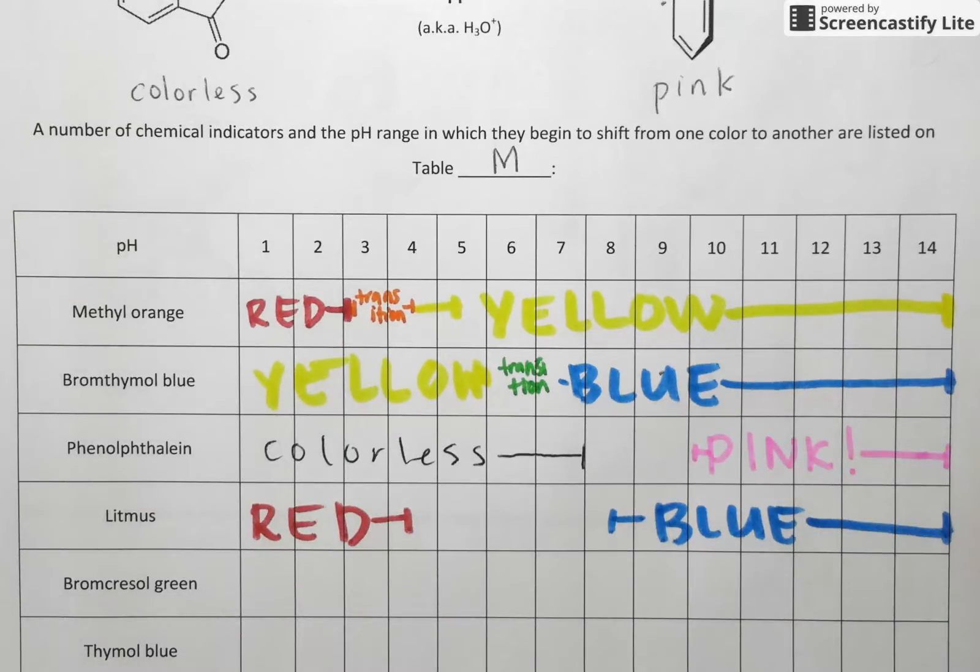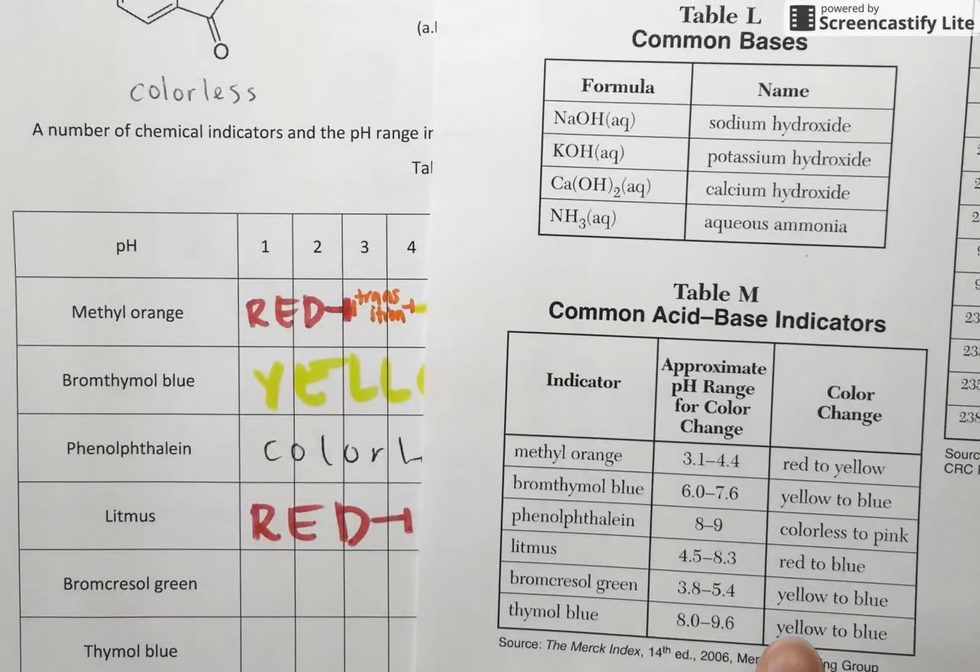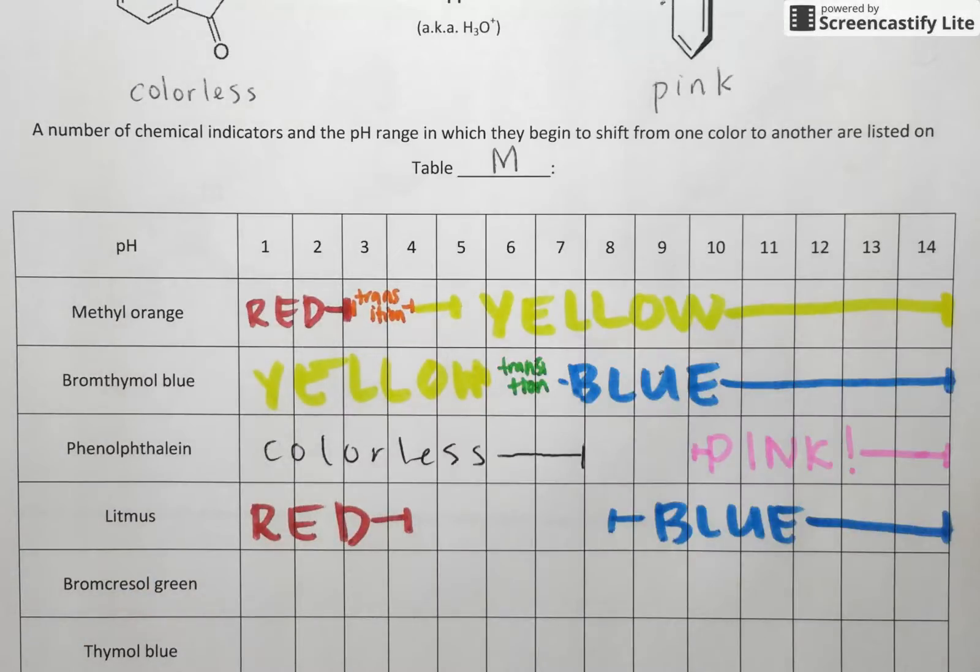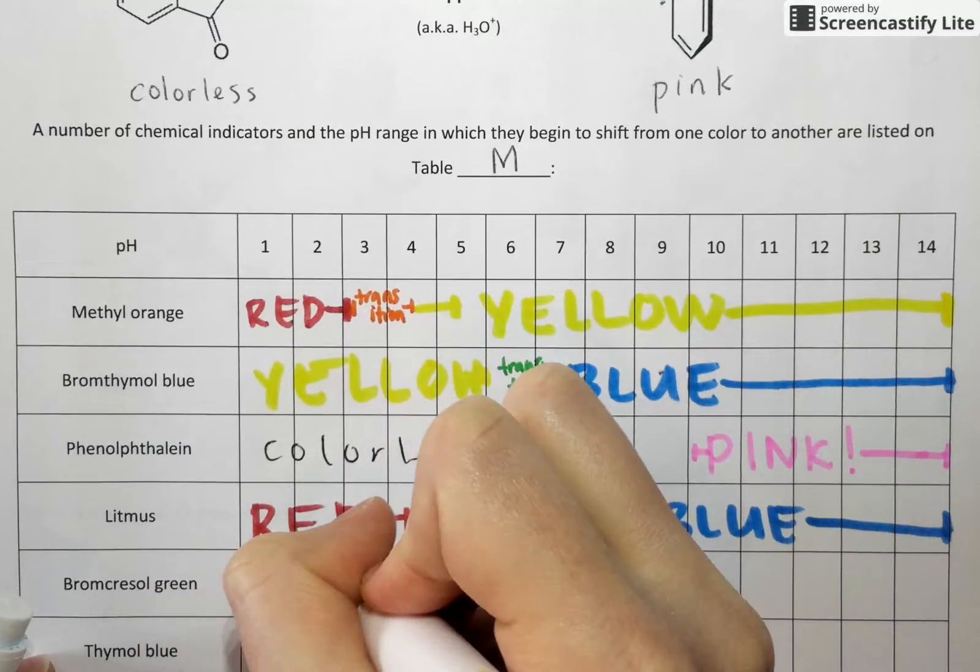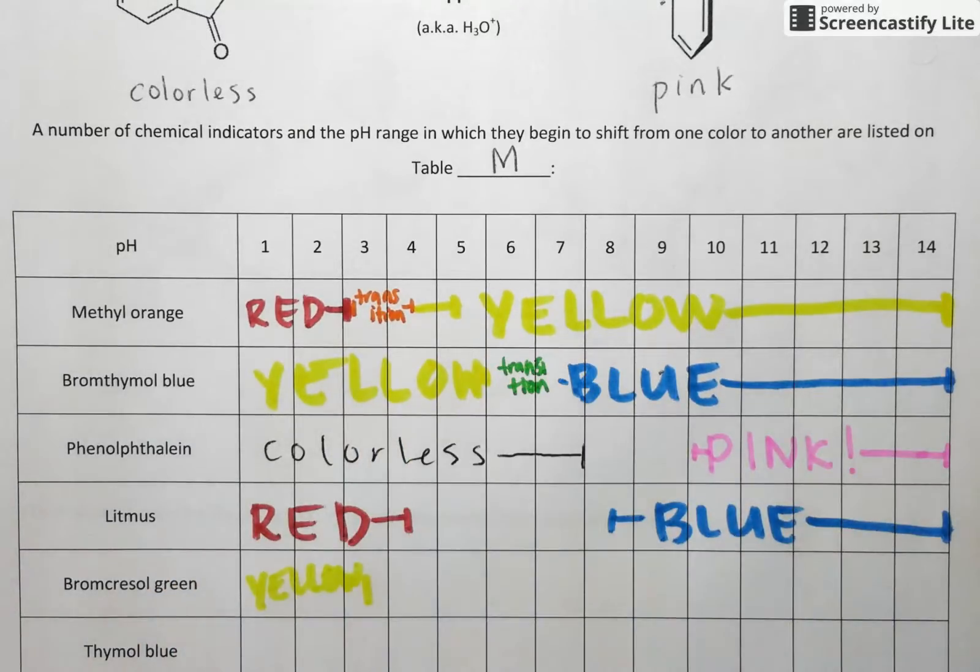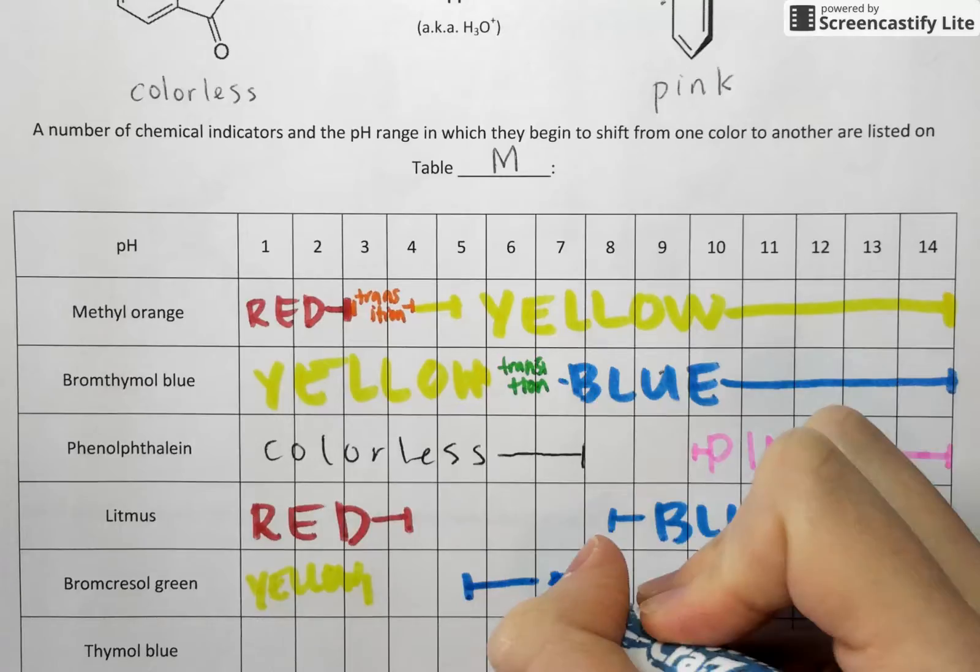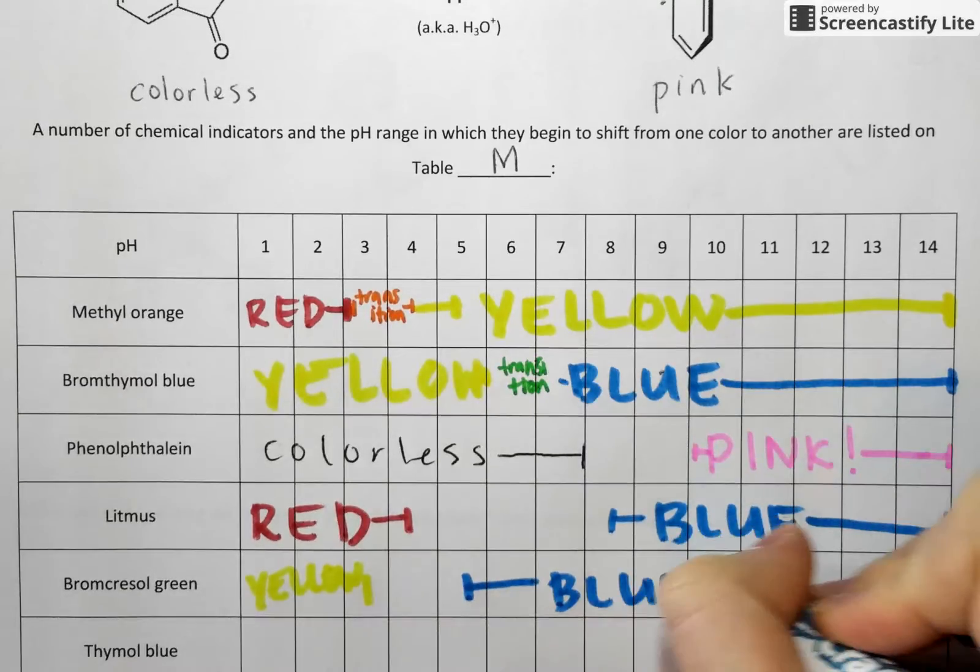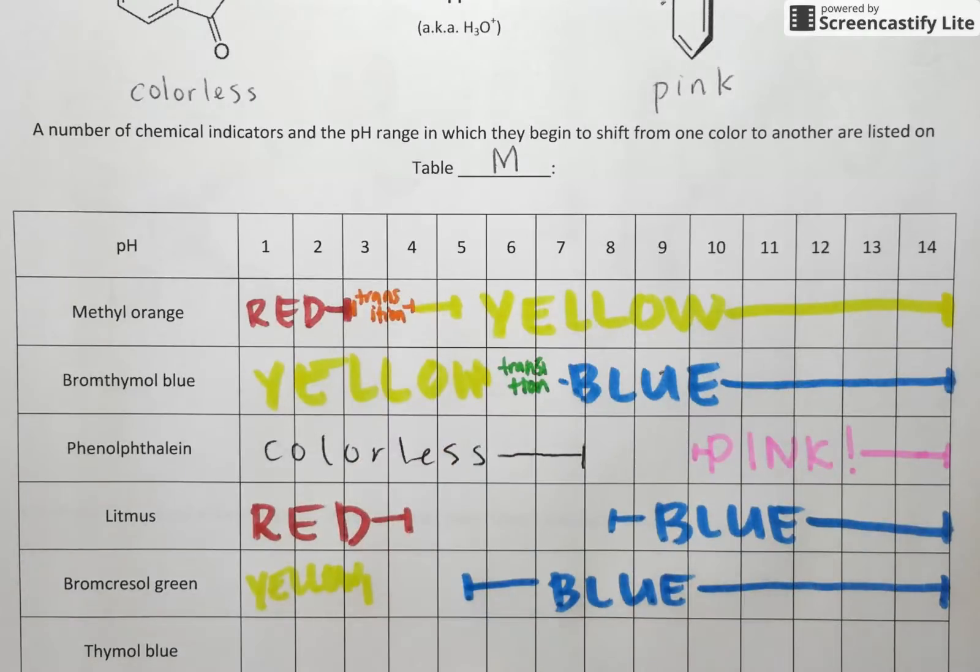And our last two, we've got bromcresol green. Anything to the left of 3.8 is going to show up as yellow. We'll transition between 3.8 and 5.4 to a nice blue color. You can see the color change there is very similar to bromthymol blue, but the range over which it changes is slightly different.